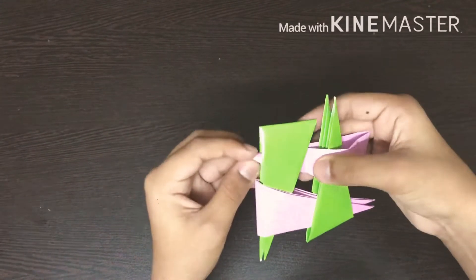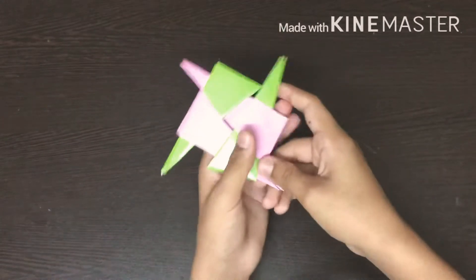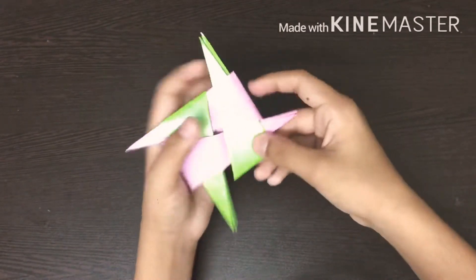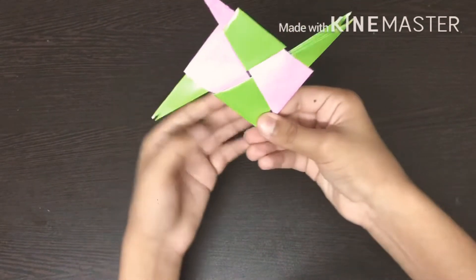Now fold it to the side. Fold the shape. Now fold this corner into place. Now fold it to the side.